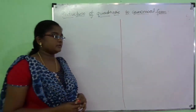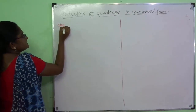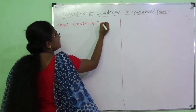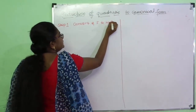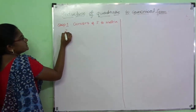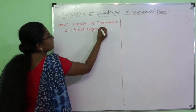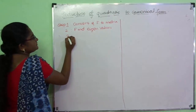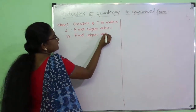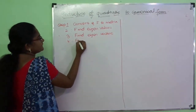Now let's see the steps involved in reducing the quadratic form to canonical form. Step 1: convert the expression, that is the quadratic form, to matrix form. Your question will be in quadratic form and we convert it to matrix form. Step 2: find the eigenvalues. Step 3: find the eigenvectors.